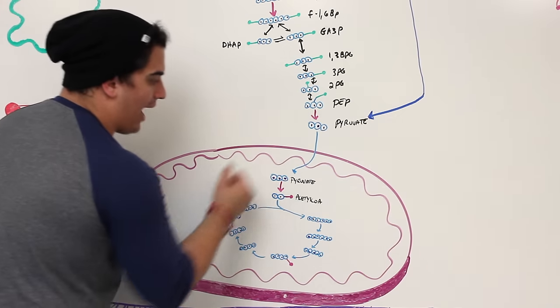The fatty acids from triglycerides generally don't contribute to gluconeogenesis — they get pushed into beta-oxidation and converted into acetyl-CoA. There is an exception: odd-chain fatty acids can be converted into succinyl-CoA, then to malate, which can contribute to gluconeogenesis. However, the contribution of odd-chain fatty acids is insignificant, so mainly just glycerol is considered.